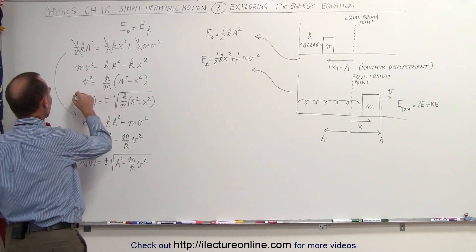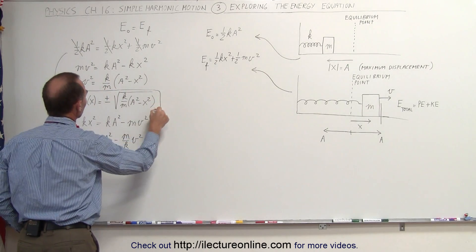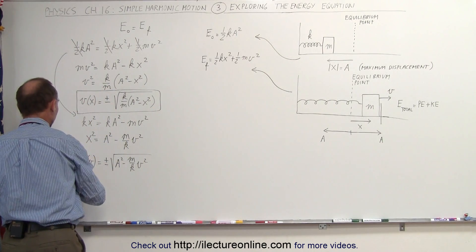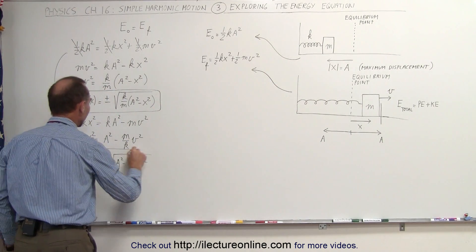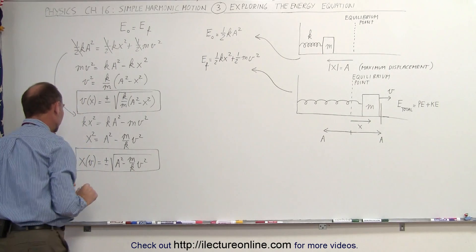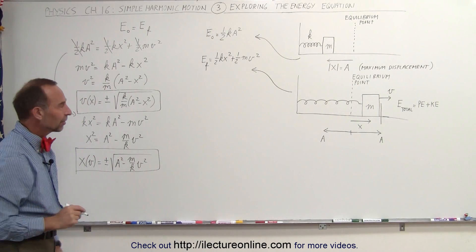Let me go ahead and box these two equations. That's how we derive the two equations — one for the velocity as a function of position, and the other for position as a function of velocity.